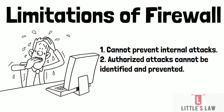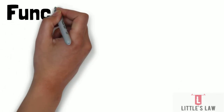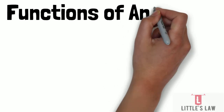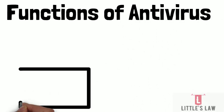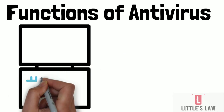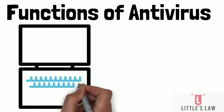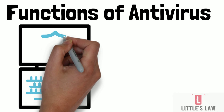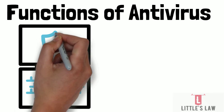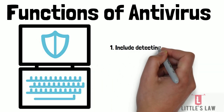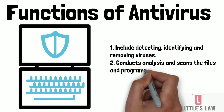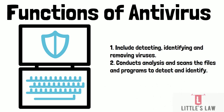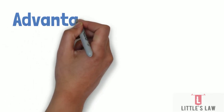Now let's see the functions of antivirus. Antivirus functions include detecting, identifying, and removing viruses. The software conducts a detailed analysis of the system, scans the files and programs to detect and identify threats, and then deletes the viruses.